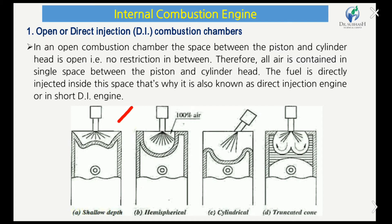In the open or direct injection combustion chamber, there are different types including hemispherical and cylindrical cavity designs. In the open combustion chamber, the space between the piston and cylinder head is open — no restriction in between. Therefore, all air is contained in a single space between the piston and cylinder head, and the fuel is directly injected inside that space. That is why it is also known as a direct injection engine, or DI engine.